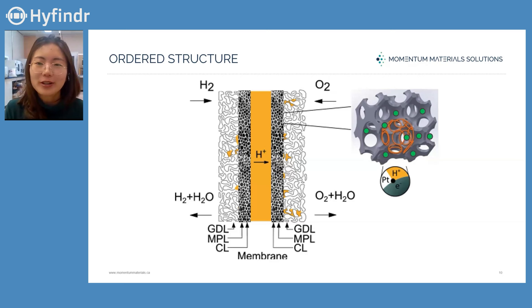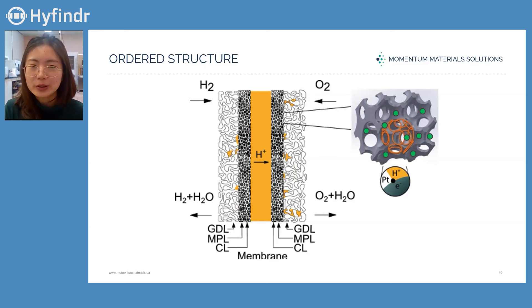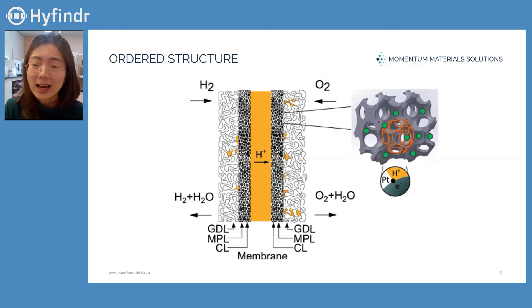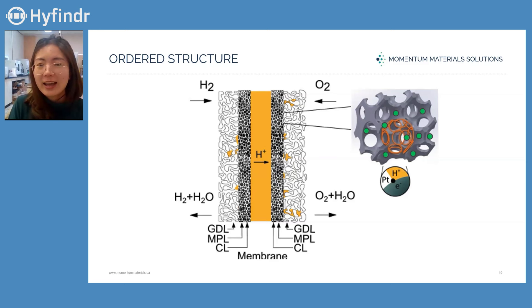Do you have even more ideas to increase efficiency further? In the future, our goal will be focusing on introducing more organization — a more ordered structure — into the PEM fuel cell using our materials. We want to build what is called an ordered structured membrane electrode assembly by making the catalyst layer more controllable. Ordered structure not only increases platinum utilization in the long term, it could largely reduce the usage of platinum in PEM fuel cells and extend the lifetime of the catalyst layer, which extends the lifetime of the whole stack.